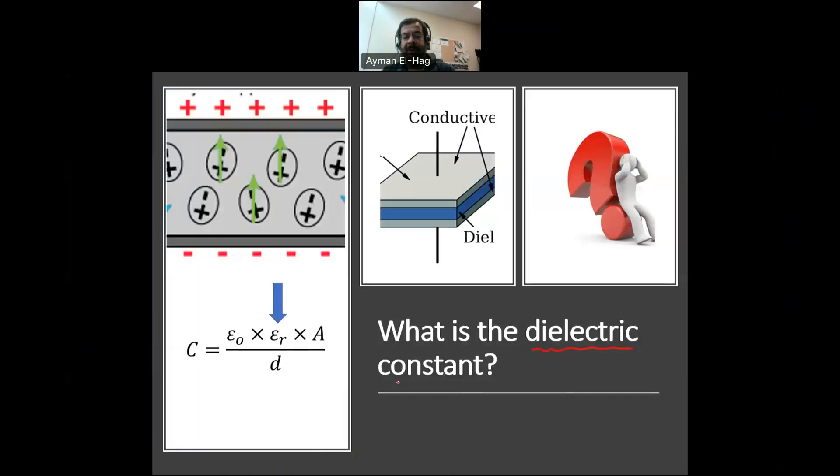The dielectric constant is a concept that we use to describe the energy stored in the capacitor. When teaching circuit, we use this concept. And also, if you are in high voltage, the dielectric constant is something we use frequently. So, what is this dielectric constant, or what we call sometimes the relative permittivity?